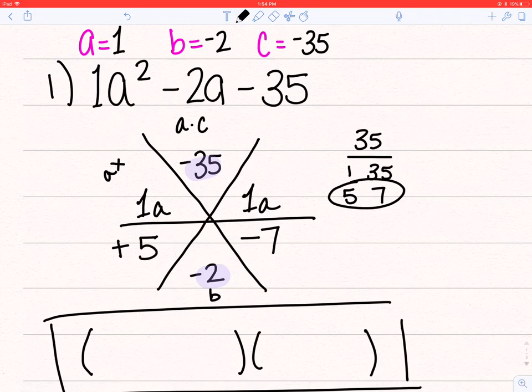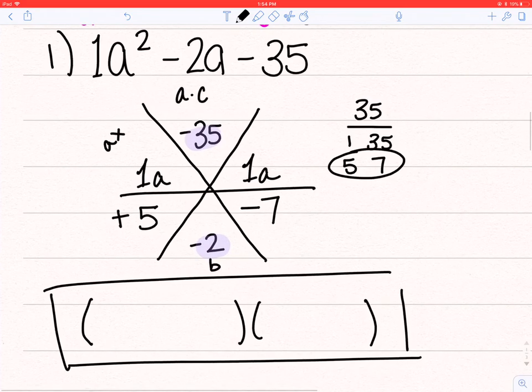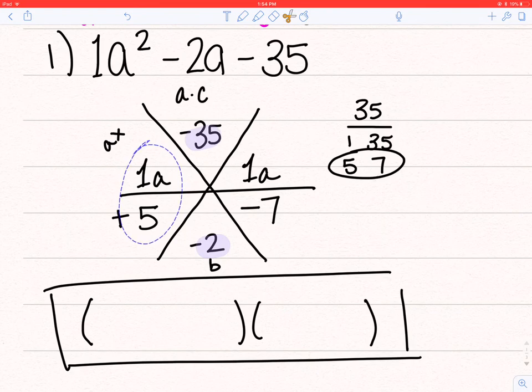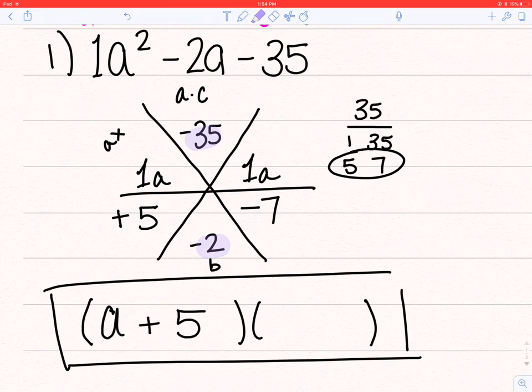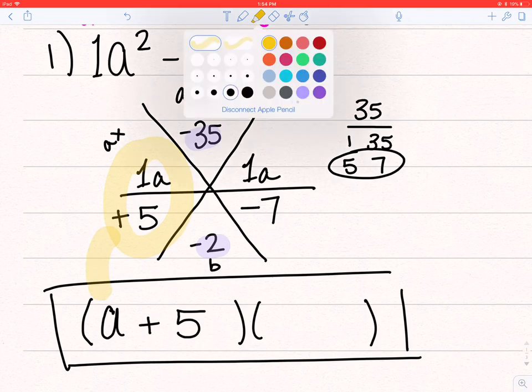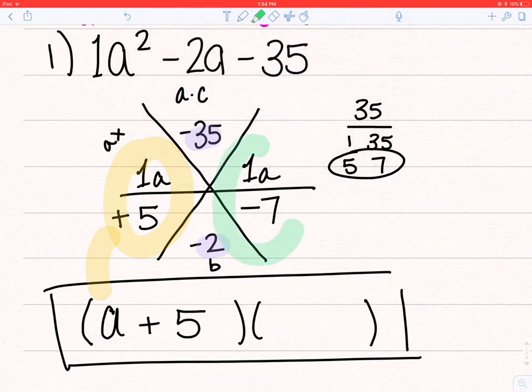Now, the bigger number has to match the sign of b, so I'm going to have negative 7, positive 5. It doesn't matter which side these go on. Now, from here, I'm looking at the left side, 1a and 5. They don't simplify, so I have a plus 5 as one of my factors, because I don't need to write down 1a. So I have a plus 5 as my first factor. My second factor is going to be a minus 7. I just write a minus 7. So my two factors are a plus 5 and a minus 7.